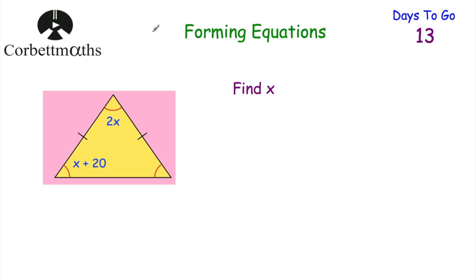Let's look at our next question. We've got a triangle and we've been asked to find X. Press pause now and find X. This is an isosceles triangle — we know because of the dashes on two sides, meaning those sides are equal in length. It has a vertical line of symmetry, so the two base angles are equal. This angle over here would be X plus 20 as well, the same as the other base angle, and the third angle is 2X.